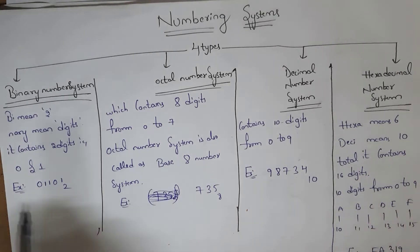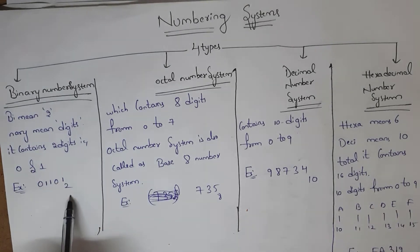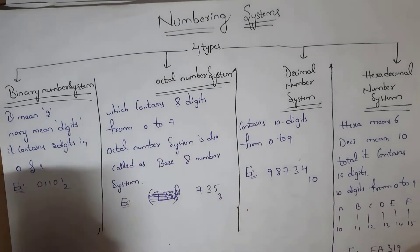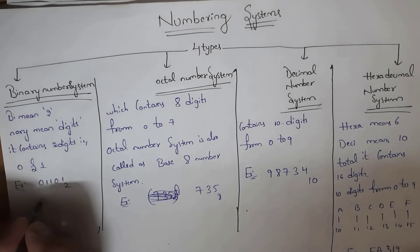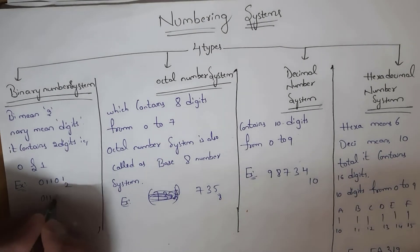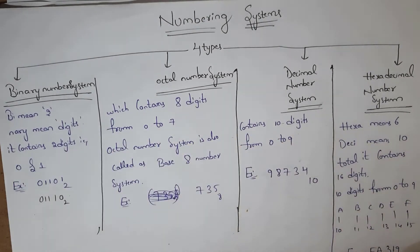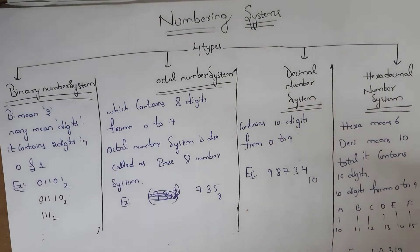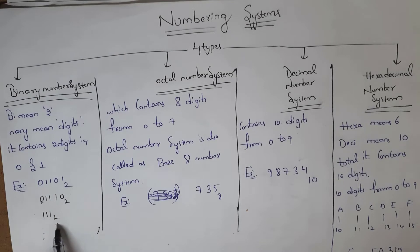Binary number system contains only two digits: zero and one. We also call it the base-2 number system. Examples include 01101 base 2 and 01110 base 2. Any number consisting only of 0s and 1s belongs to the binary number system.